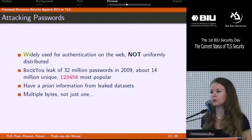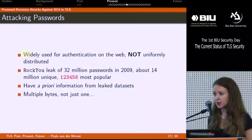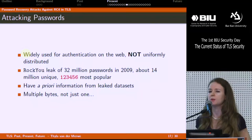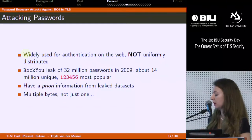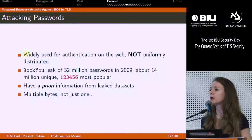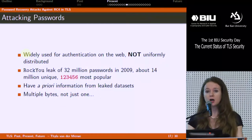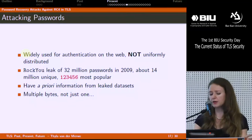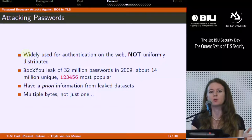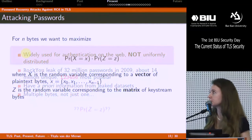The question was: can we do better by looking at passwords? We wanted to attack passwords because they are widely used for authentication, and we know passwords are not uniformly distributed. Using leaked password data sets for our a priori distribution, and making use of that distribution information, we hoped to boost the old attacks to something far more practical. We know users routinely choose bad passwords — '123456' is currently the most popular in leaked data sets — and because leaked data sets exist, we can use those for our a priori distribution. We also reframed the problem: instead of recovering one byte, we now wanted to recover several bytes of a password, thinking in a multi-byte framework.